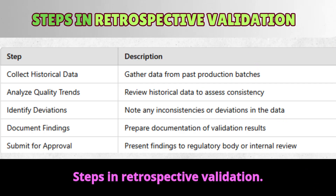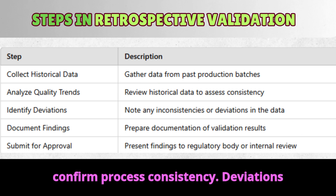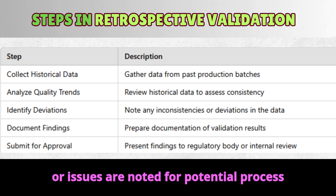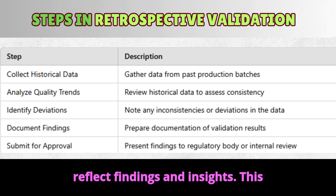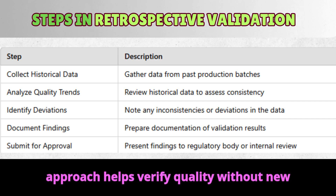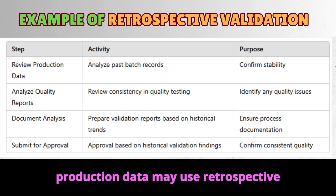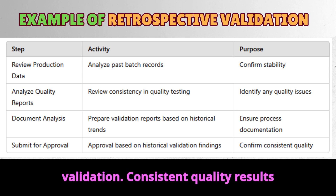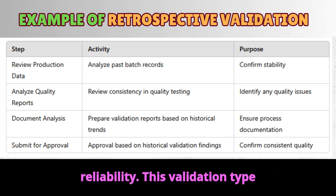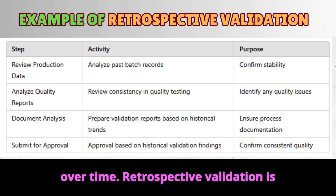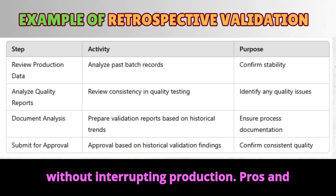Steps in retrospective validation. First, historical batch data is collected and analyzed. Data trends are reviewed to confirm process consistency. Deviations or issues are noted for potential process improvements. Documentation is updated to reflect findings and insights. This approach helps verify quality without new production tests. For example, an older medication with years of stable production data may use retrospective validation. Consistent quality results from past batches provide assurance of reliability, confirming the process remains effective over time. It allows quality checks without interrupting production.